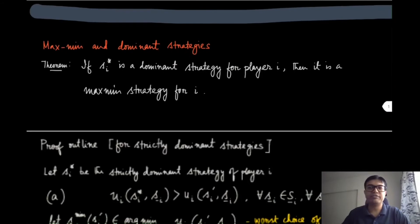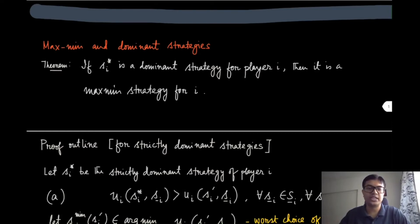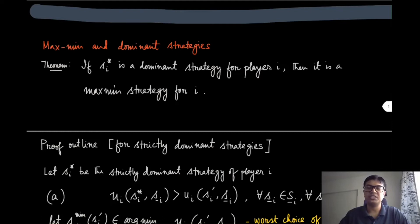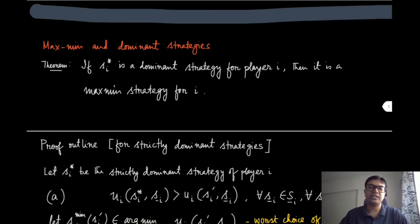Now that we have defined a different strategy, we also need to connect it with dominant strategies and pure strategy Nash equilibrium. Let us look at the relationship between maximin and dominant strategies. The theorem says: if sᵢ* is a dominant strategy for player i, then it is also a maximin strategy for player i. In some sense, if you are playing a dominant strategy, you can be safe that even if the other player is not rational and intelligent, you can still guarantee the maximin value.